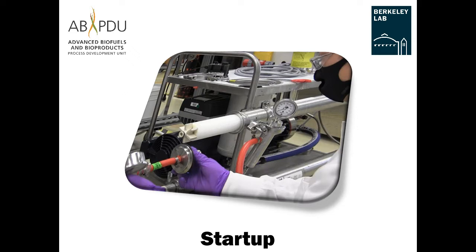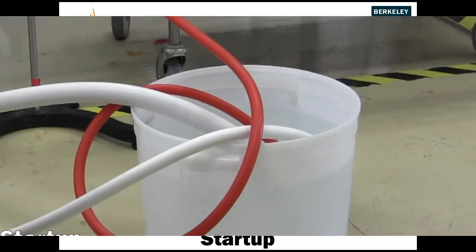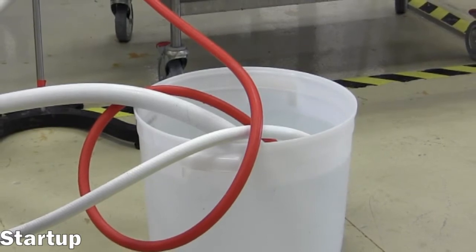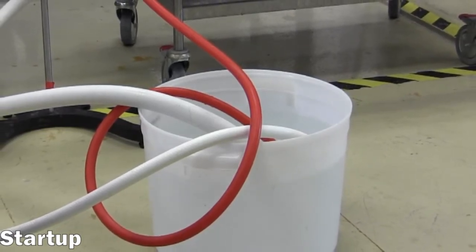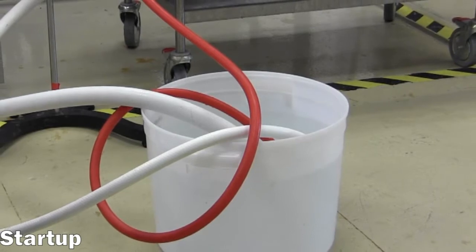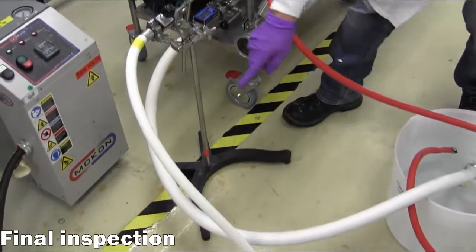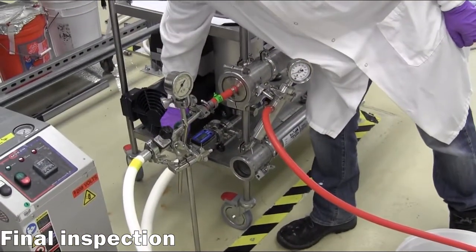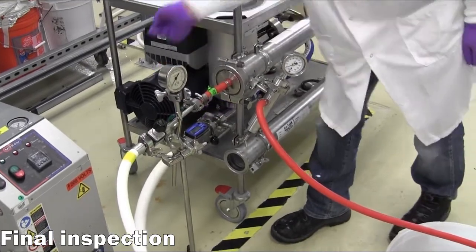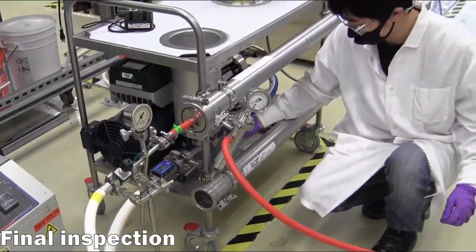Startup: The operation begins with all the inlet and outlet hoses placed in the water bucket to recirculate while the system primes. Ensure all valves are open, clamps are secure, and there is no back pressure applied on the retentate outlet manifold.